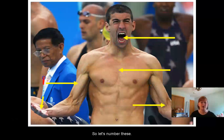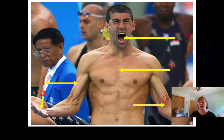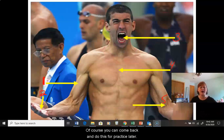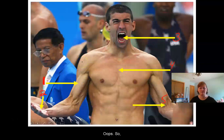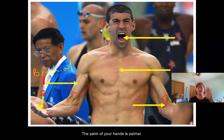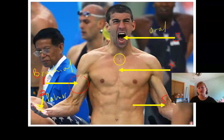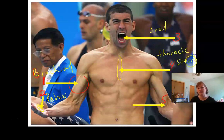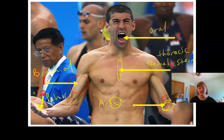Let's look at a few more. So we've got one, two, three, four, and five — pause the video and see if you can name those. Number one is his upper arm, so that is brachial. Number two is the inside of his hand — the palm of your hand — so this region is palmar. His mouth is oral. This region of his chest — you could have said thoracic for his whole chest or sternal if you were being more specific. And inside of the elbow would be anticubital.